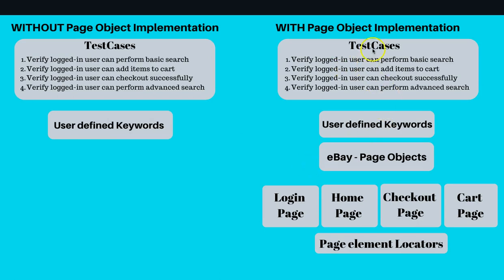So here we have, in Robot Framework, user-defined keywords. Without the Page Object implementation, the test cases we've seen so far look like these dummy test cases. For example, 'Verify logged in user can perform basic search' — in this first test case, what we did was directly call the Selenium Library keywords and wrote our basic search test cases.